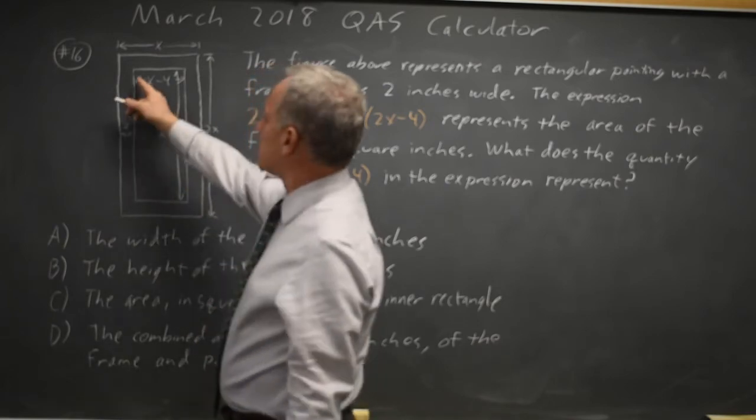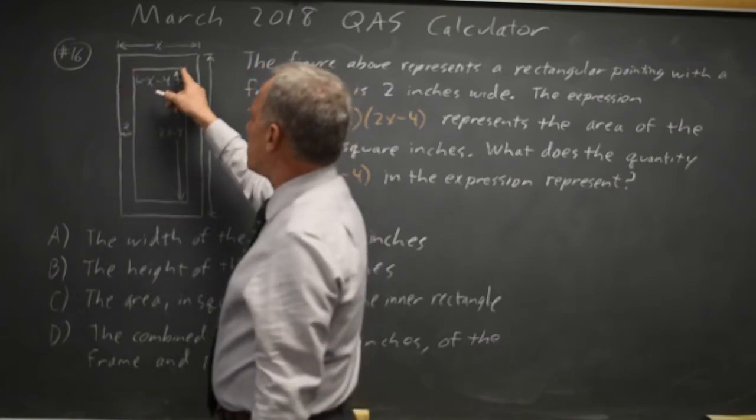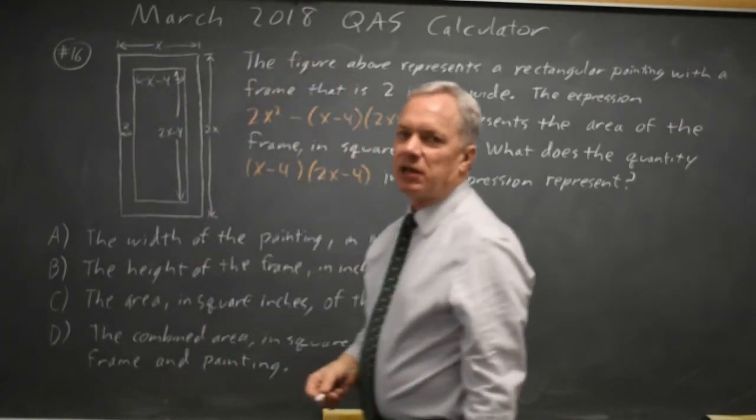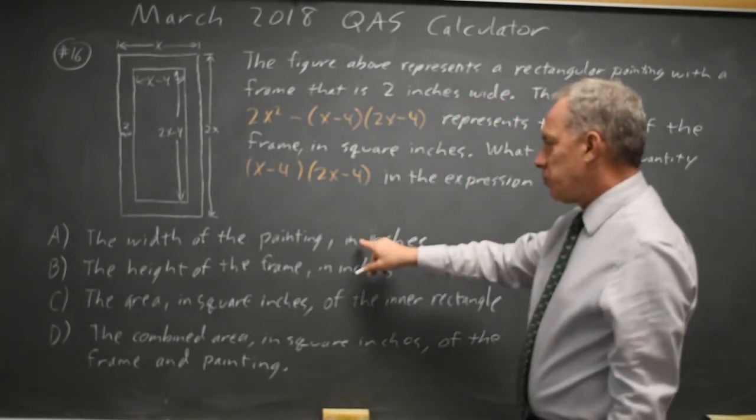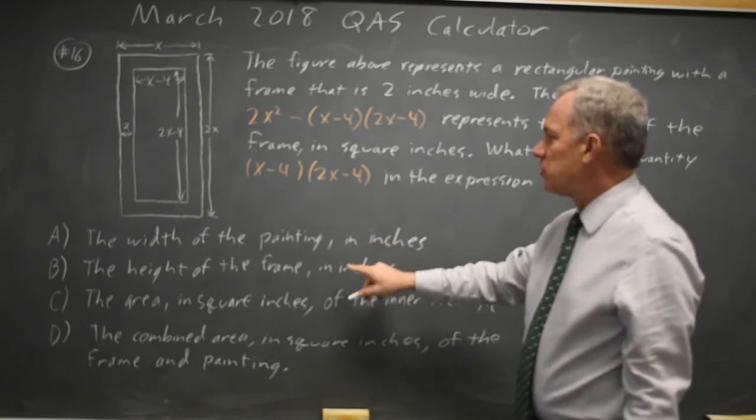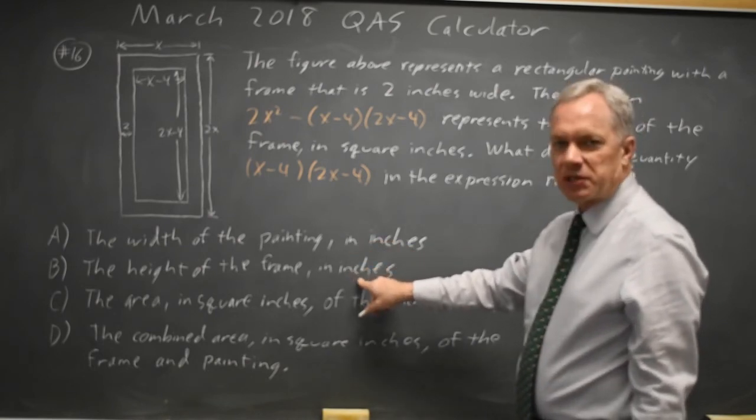So the product width times height is the area of the picture. This product represents not the width of the painting, that's just x - 4, not the height of the painting, that's 2x - 4.